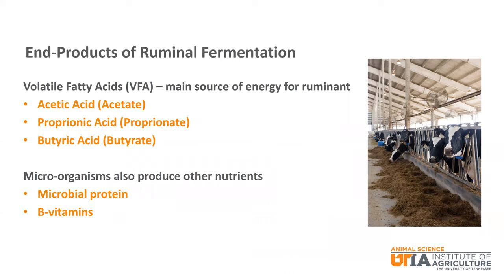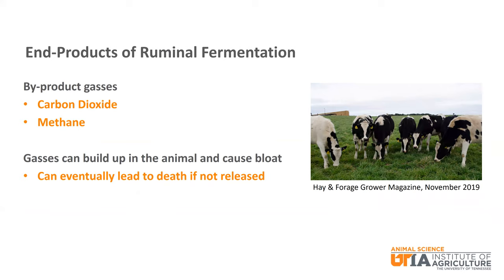The primary end products of this ruminal fermentation are volatile fatty acids, or VFAs. They are the main source of energy for the animal. The three main VFAs are acetic acid or acetate, propionic acid or propionate, and butyric acid or butyrate. The microorganisms also produce other nutrients, including microbial protein converted from non-protein nitrogen — urea is a common example — and some B vitamins. There are also byproduct gases such as carbon dioxide and methane that can build up and cause bloat in the animal, which can lead to death if not released.